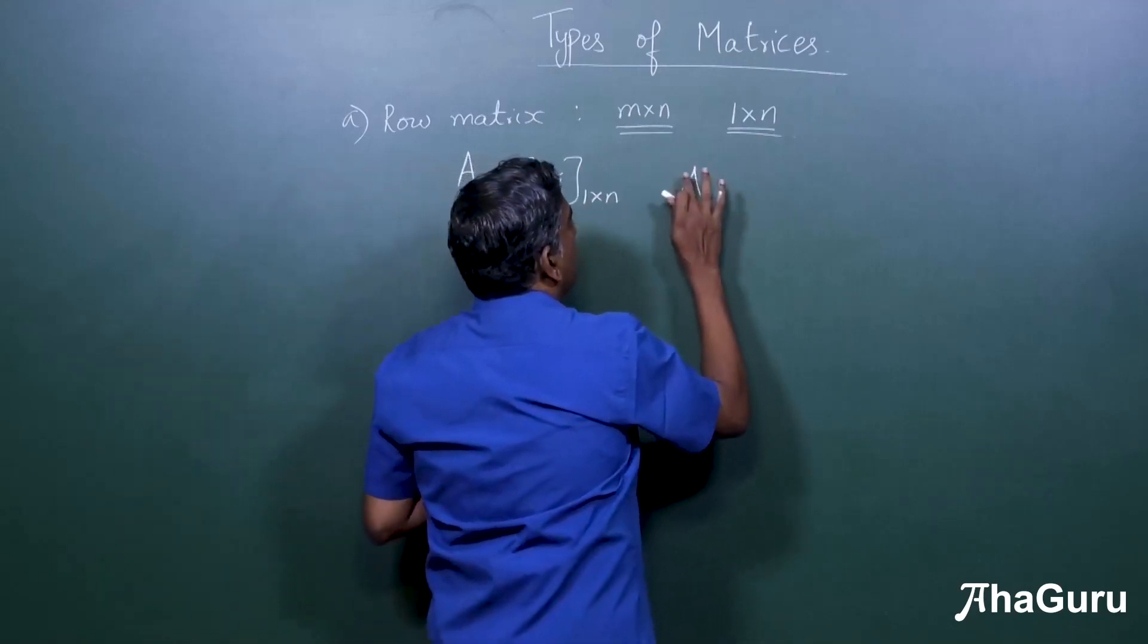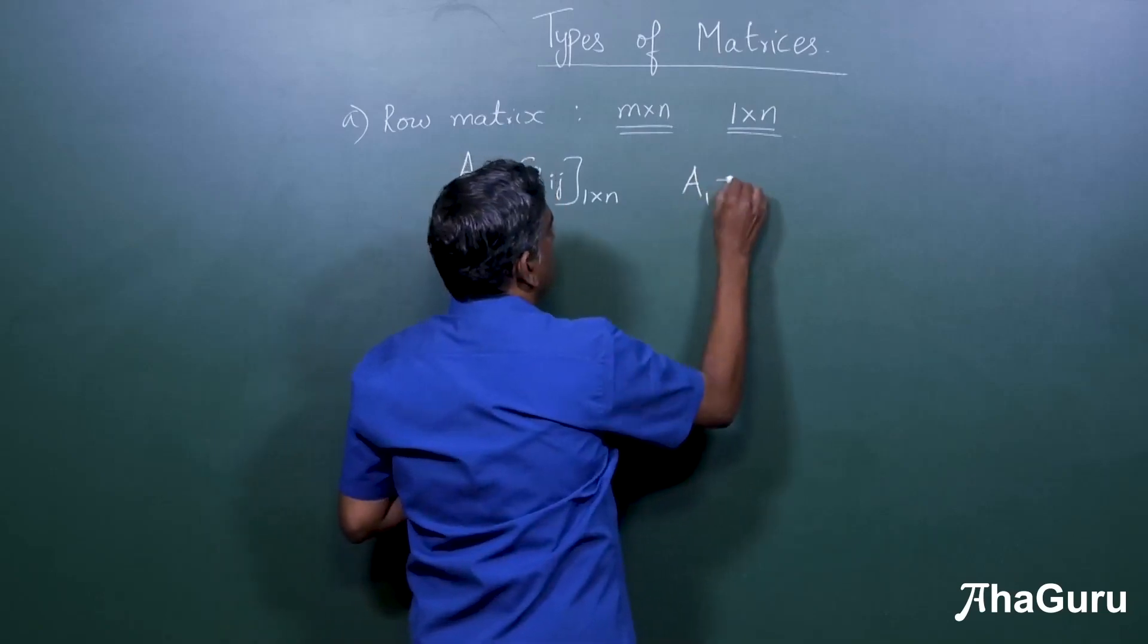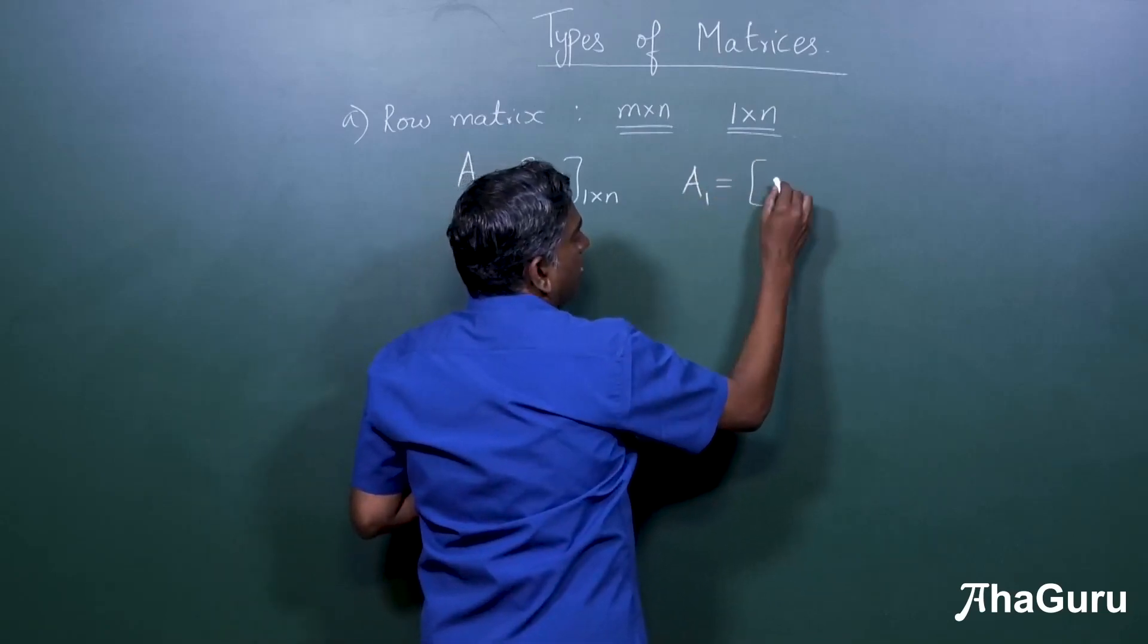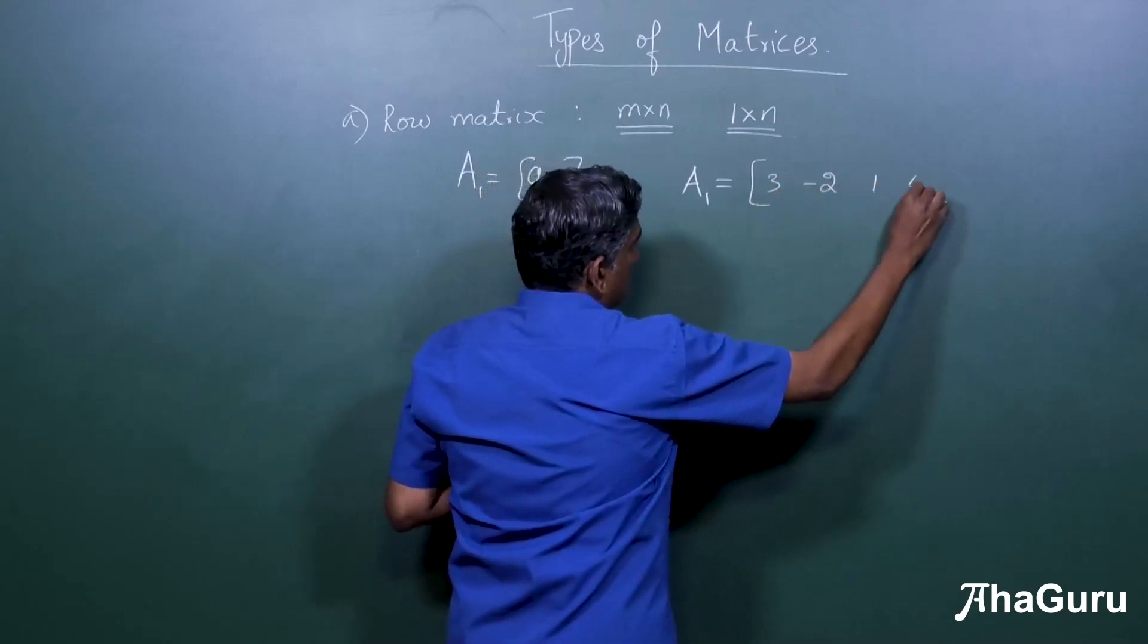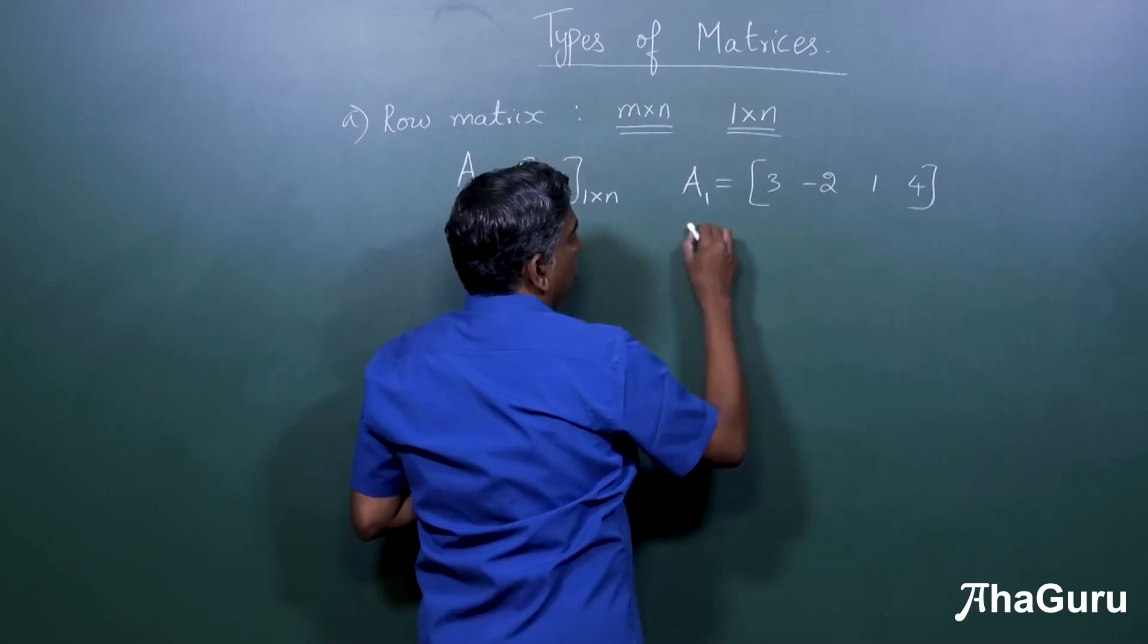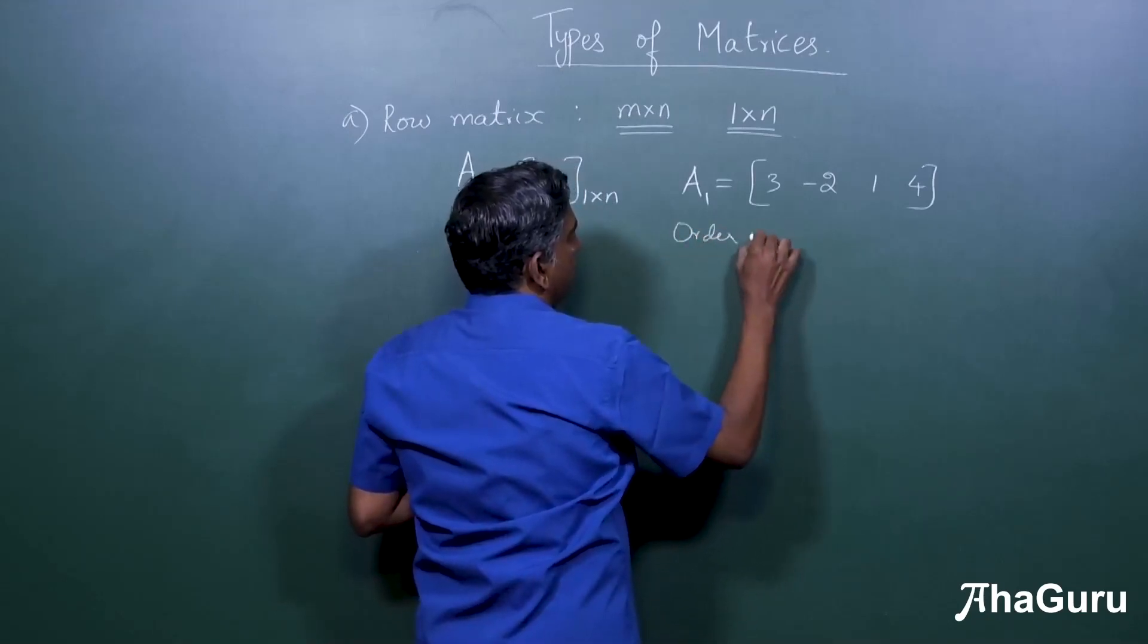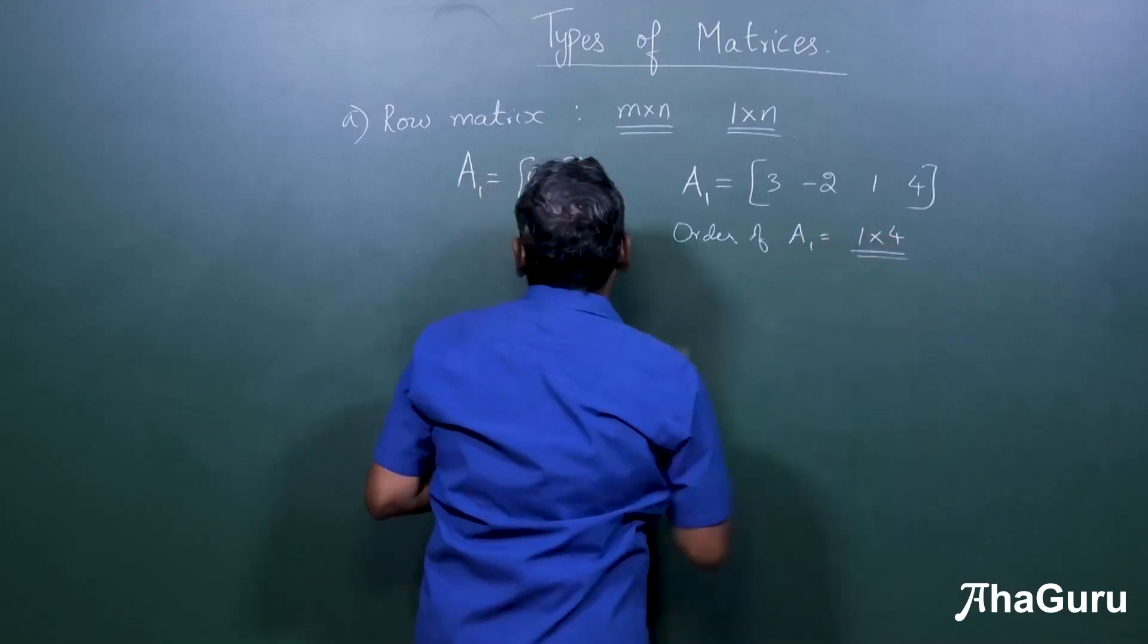For example, a could be, let me call this a1, could be let's say three, minus two, one, four. So this is one by four. So the order of a1 is equal to one by four.